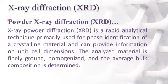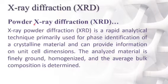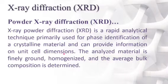The first characterization technique is X-ray diffraction (XRD), also in the form of powder X-ray diffraction. X-ray diffraction is a rapid analytical technique primarily used for phase identification of crystalline materials and can provide information on unit cell dimensions. The analyzed material is finely ground, homogenized, and the average bulk composition is determined.